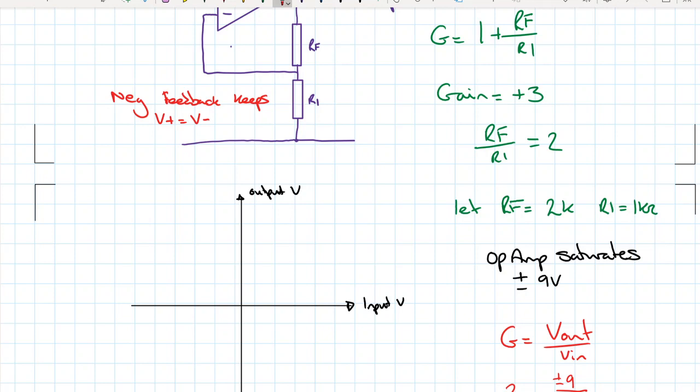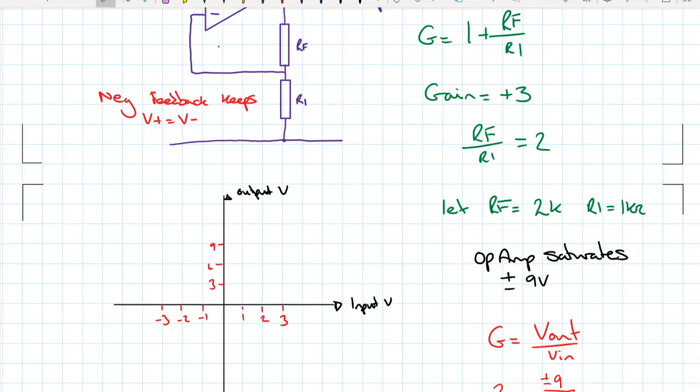So that we can now draw our graph. When we have one volt in, we're going to get three volts out. Two volts in, six volts out, and so on and so forth. So we end up with a line with a positive coefficient. And what happens at that point? Because it's going to saturate, then we're going to get, no matter how much more we put in, we get what we're going to get out. And we can then do the same with negative voltage in. So we end up with a characteristic graph that looks like that.